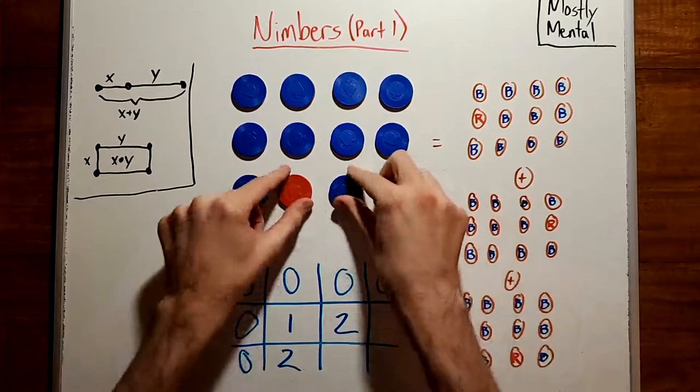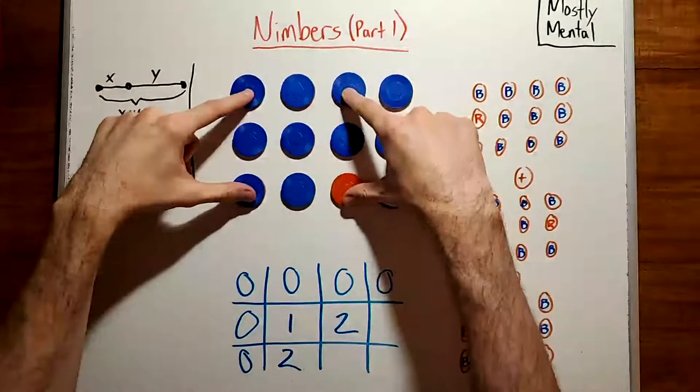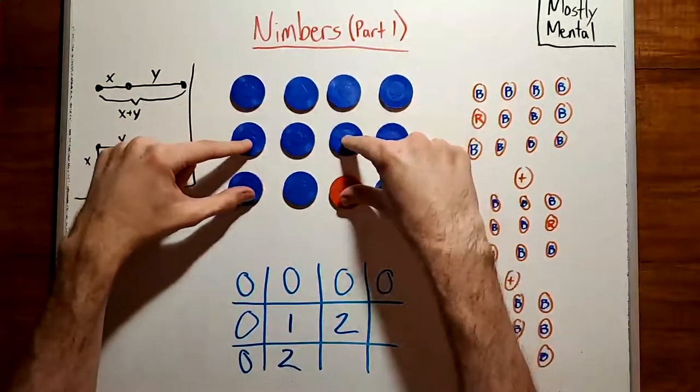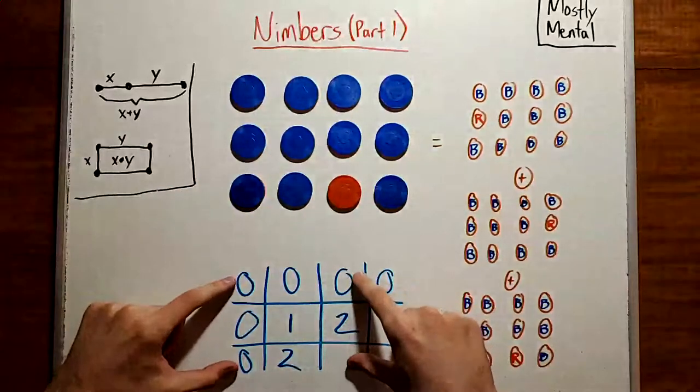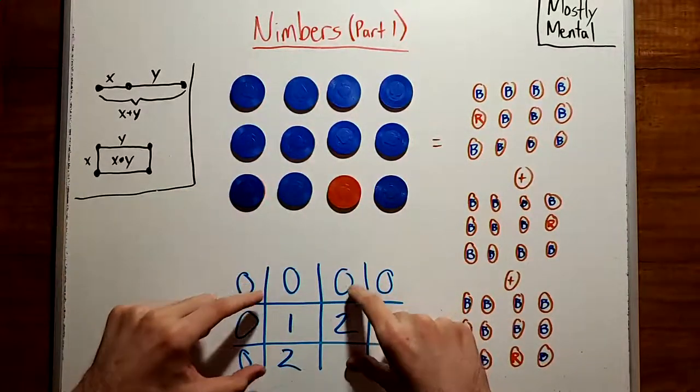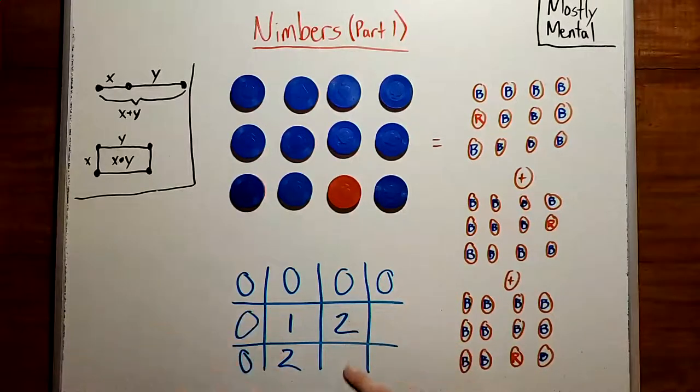Okay, what about this one? Well, now there are four possible moves. We could flip over these four, these four, these four, or these four, which give us values zero, two, two, and one, respectively. So this position must have value three. And so on.